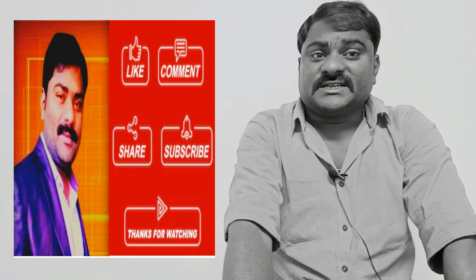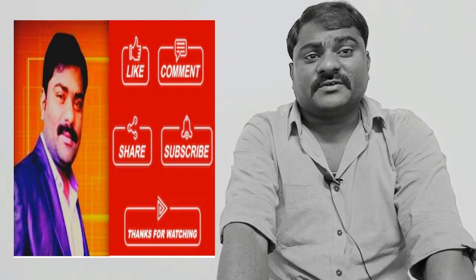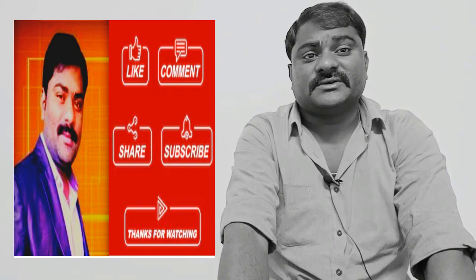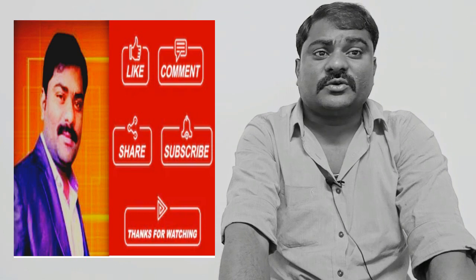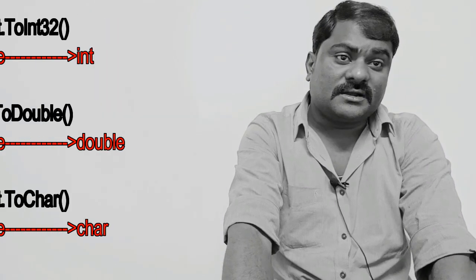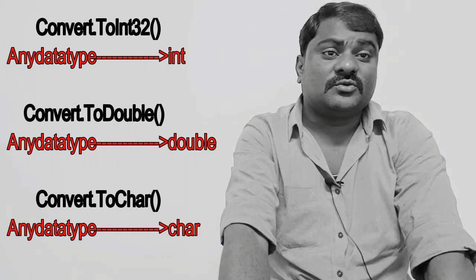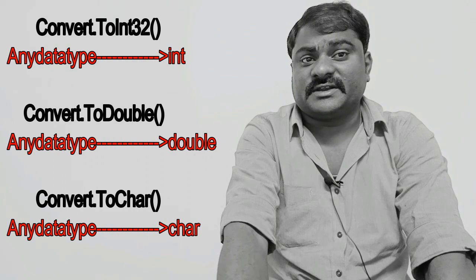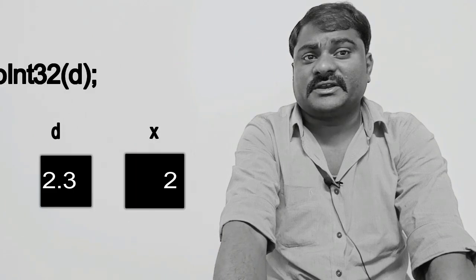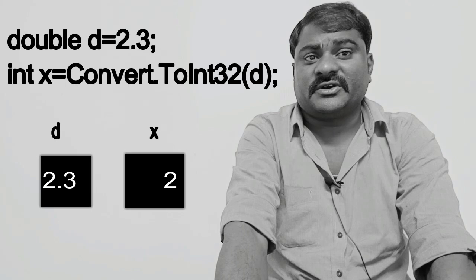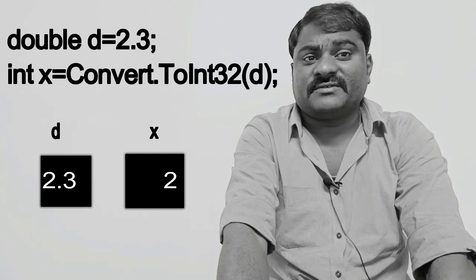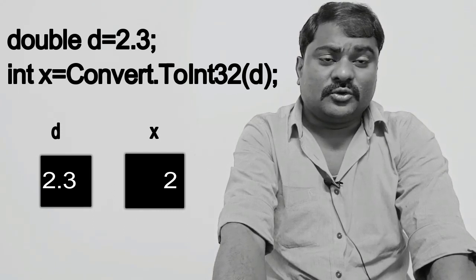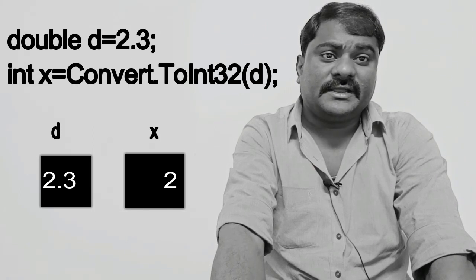There is one more style of typecasting: CTS style of typecasting. If you want to convert any data type to int, use Convert.ToInt32(). Any data type to double: Convert.ToDouble(). Any data type to char: Convert.ToChar(). For example, double d equal to 2.3, int x equal to Convert.ToInt32(d). Since a double value cannot be stored exactly in an integer, the accuracy of the value will not be maintained — so 2.3 stored in d will become 2 stored in x as an integer value.